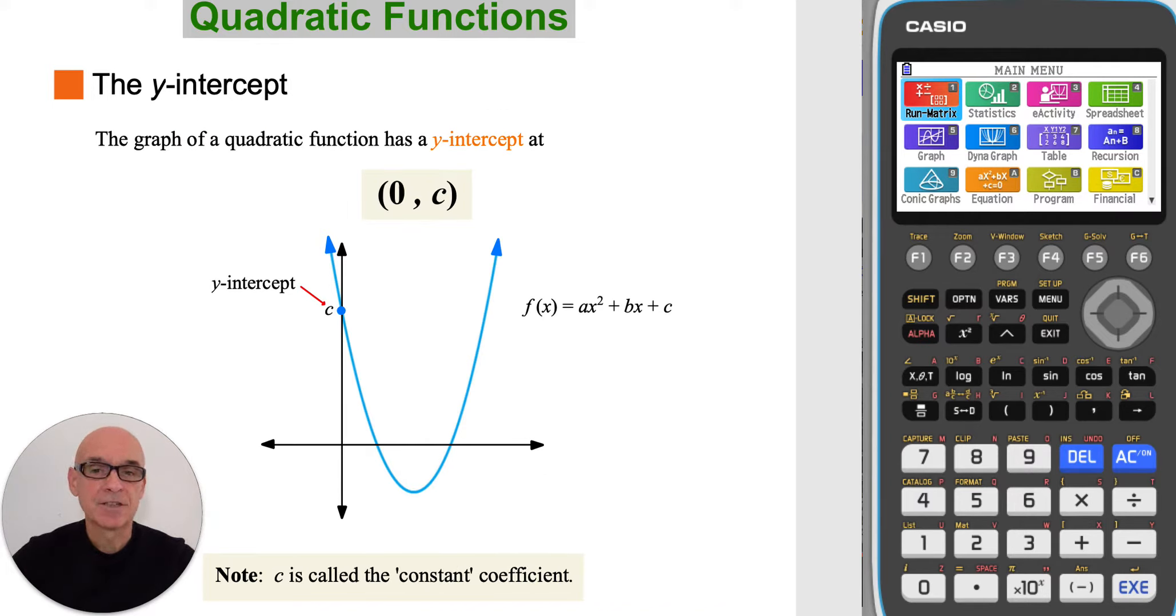The function has a y-intercept at the point zero comma c, where c is the value of the constant coefficient.